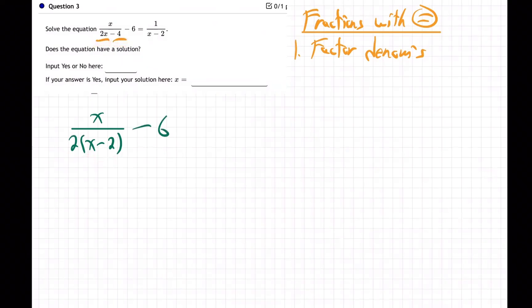So that's actually the first step. Let me get a little more space here. Minus 6 equals 1 over x minus 2. I probably spaced that out too much. Let me try again.